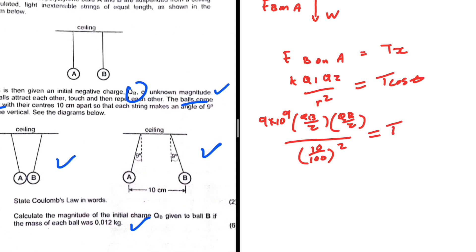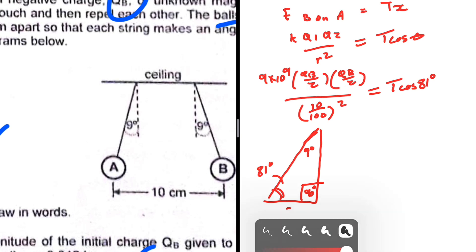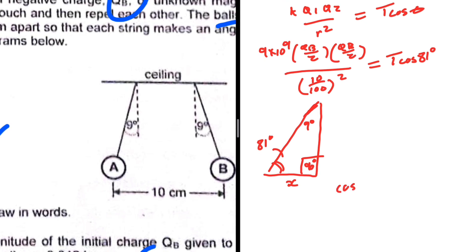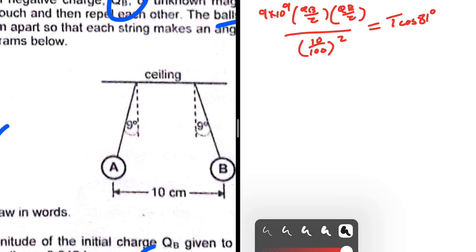Looking at the geometry: each string makes an angle of 9 degrees with the vertical, and since we know there are 90 degrees in the corner, the angle from the horizontal is 81 degrees. To find the x-component of the tension we use t·cos(81°), because cos(θ) = adjacent/hypotenuse, so tx = t·cos(θ).